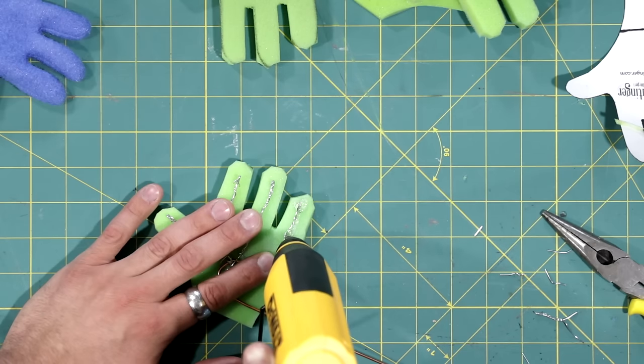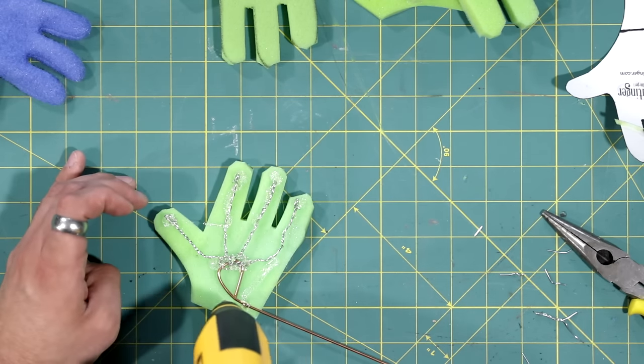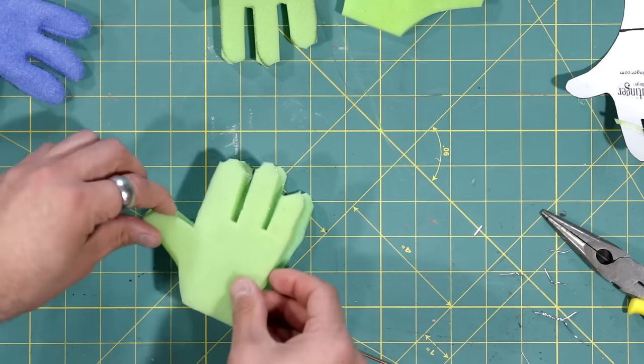I typically use contact cement for this, but hot glue will do just fine. Now I sandwich this with another foam hand.